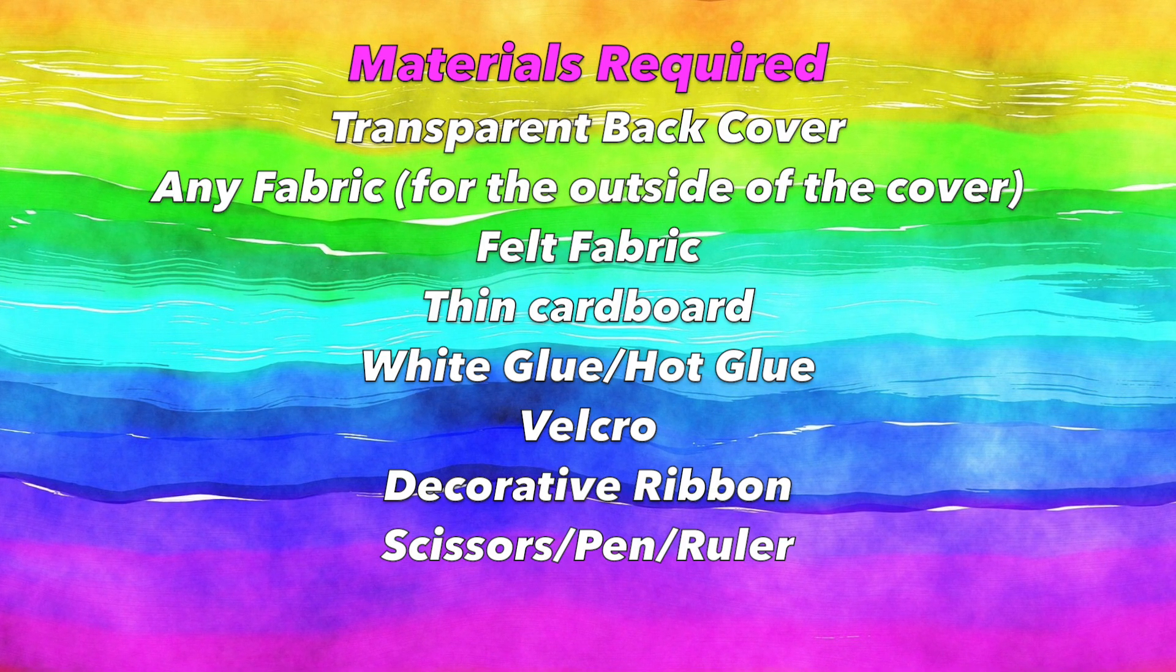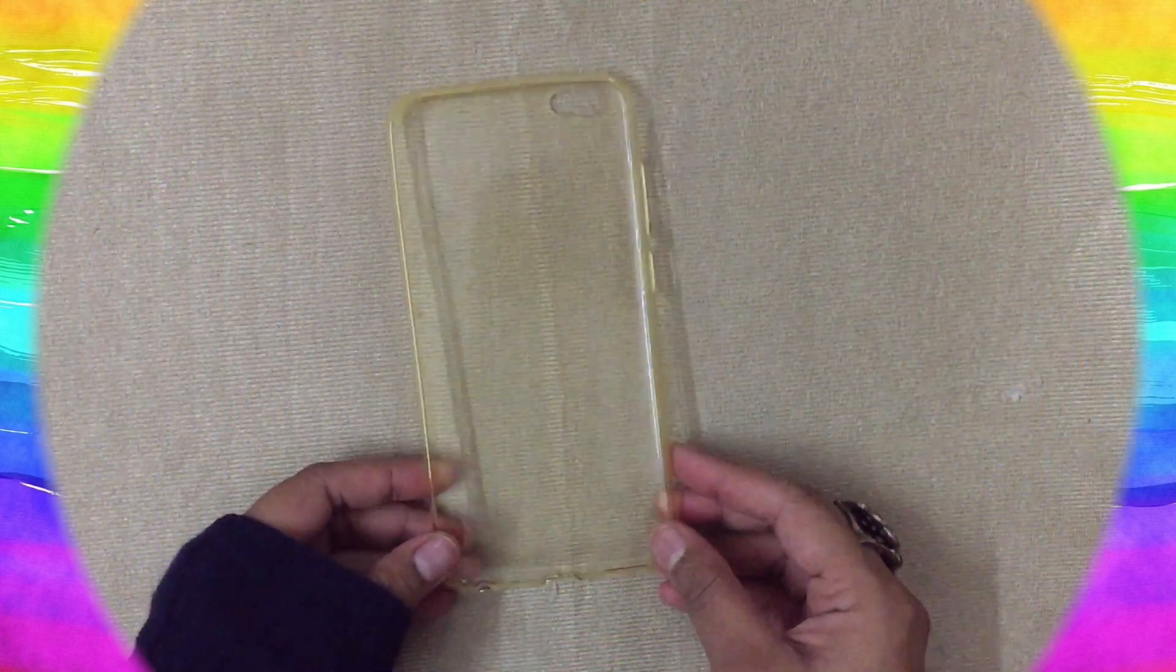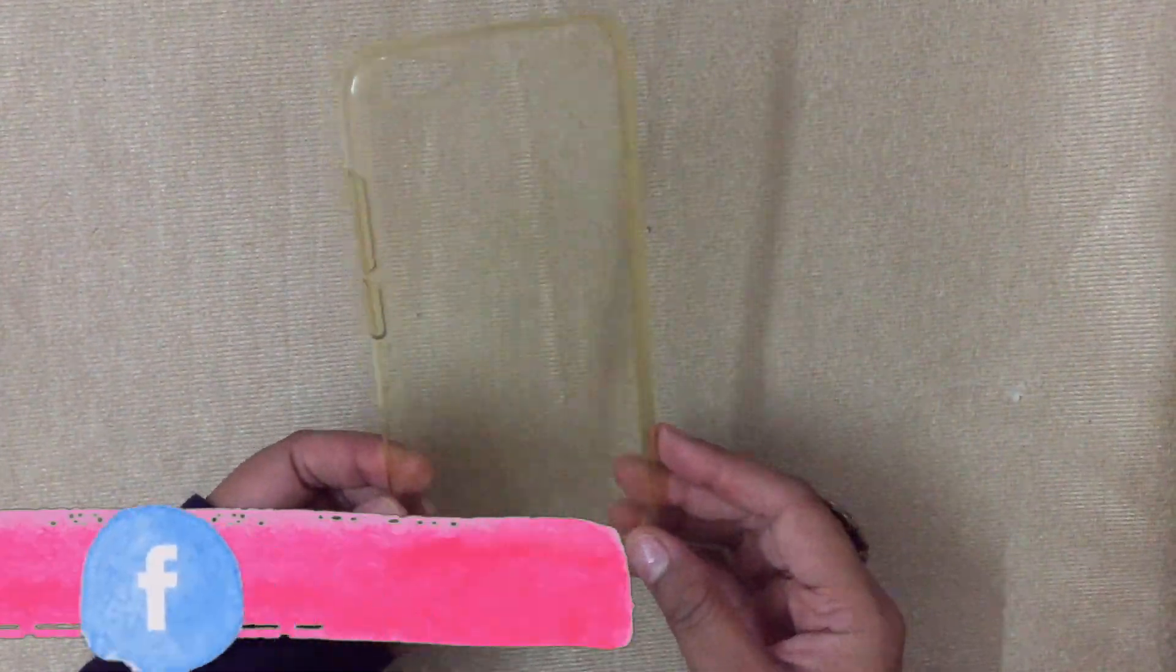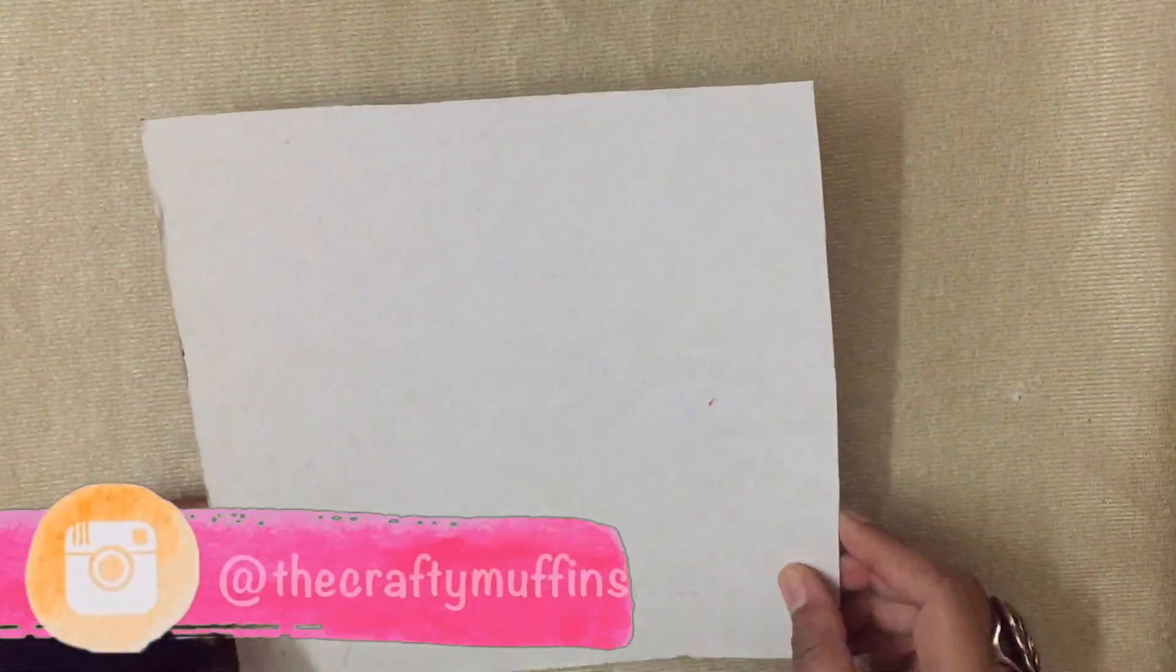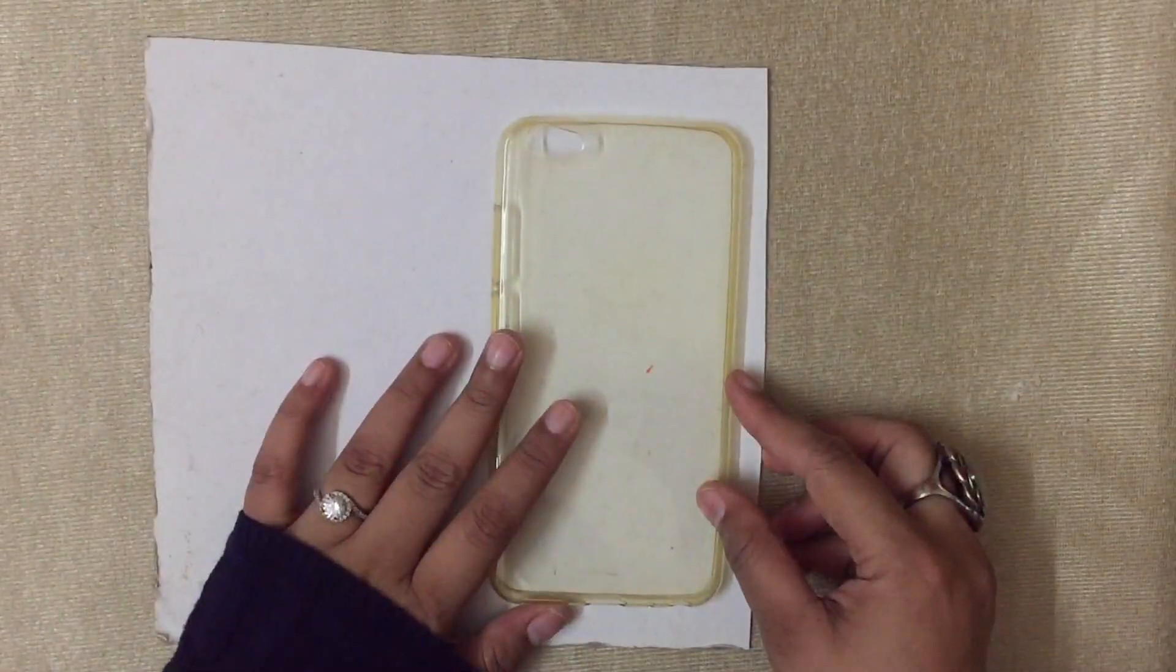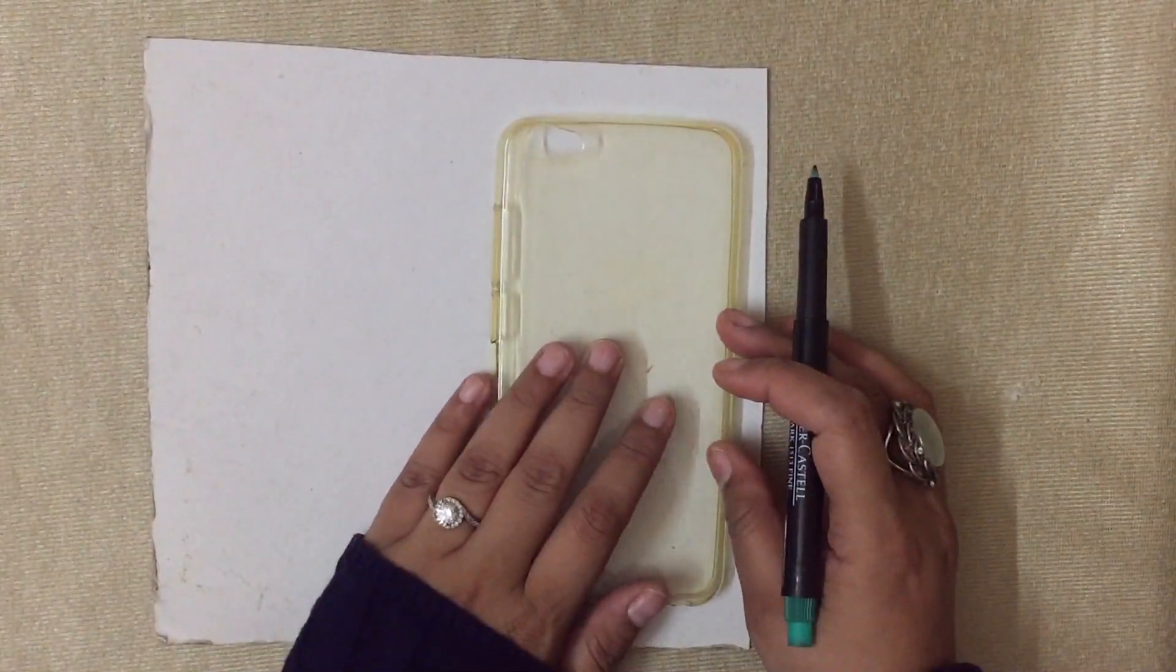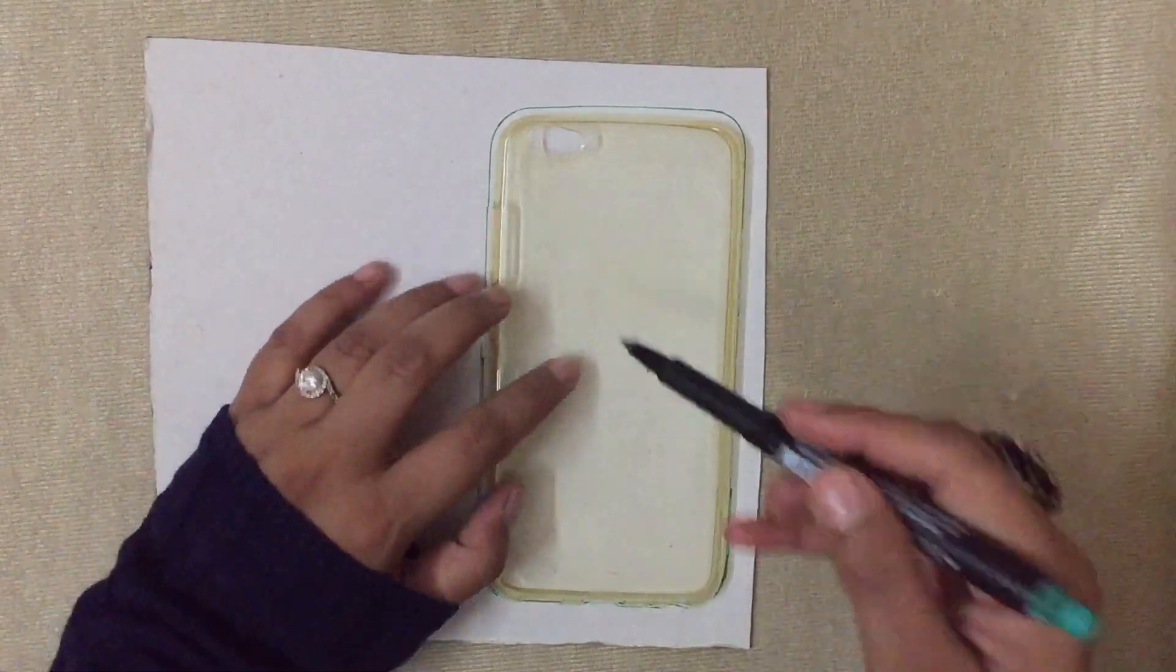Get started with the tutorial. First you need the transparent back cover of your phone and a piece of thin cardboard like so. Next, trace the outline of the back cover on the cardboard piece.